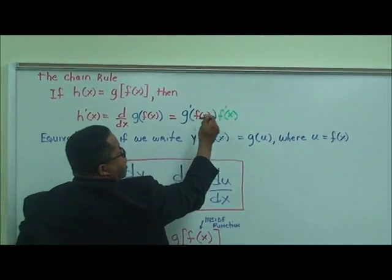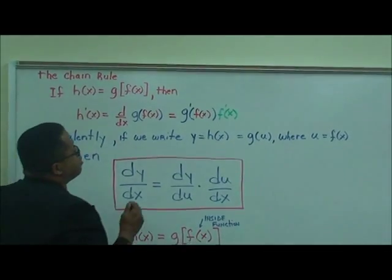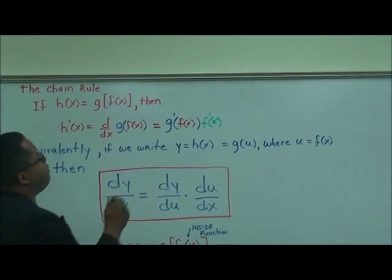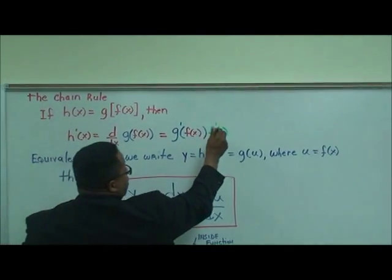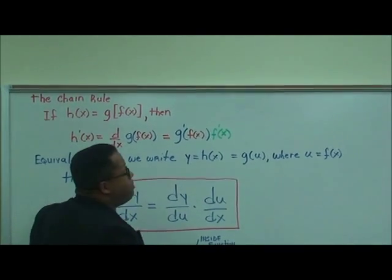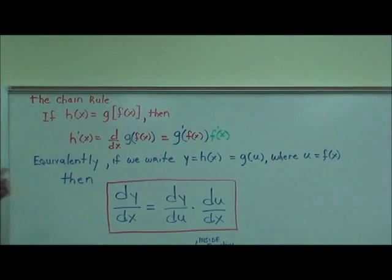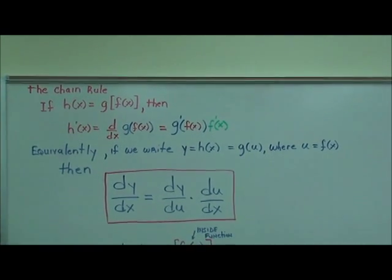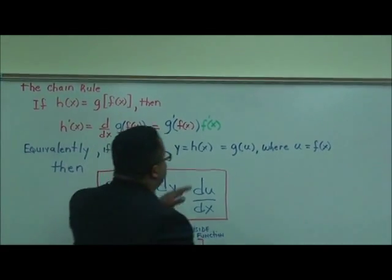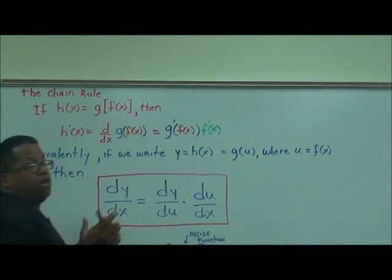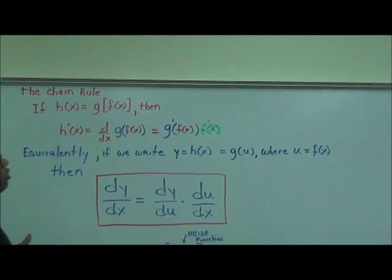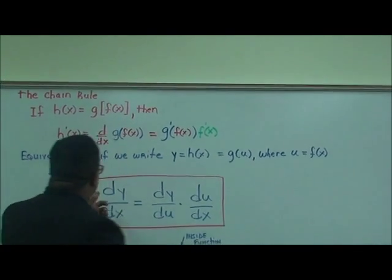h prime of x is equal to g prime of f of x — the derivative of the outside function g, evaluated at the inside function f of x — times f prime of x, the derivative of that same inside function. Equivalently, if we write y equal to h of x equal to g of u, where u equals f of x: